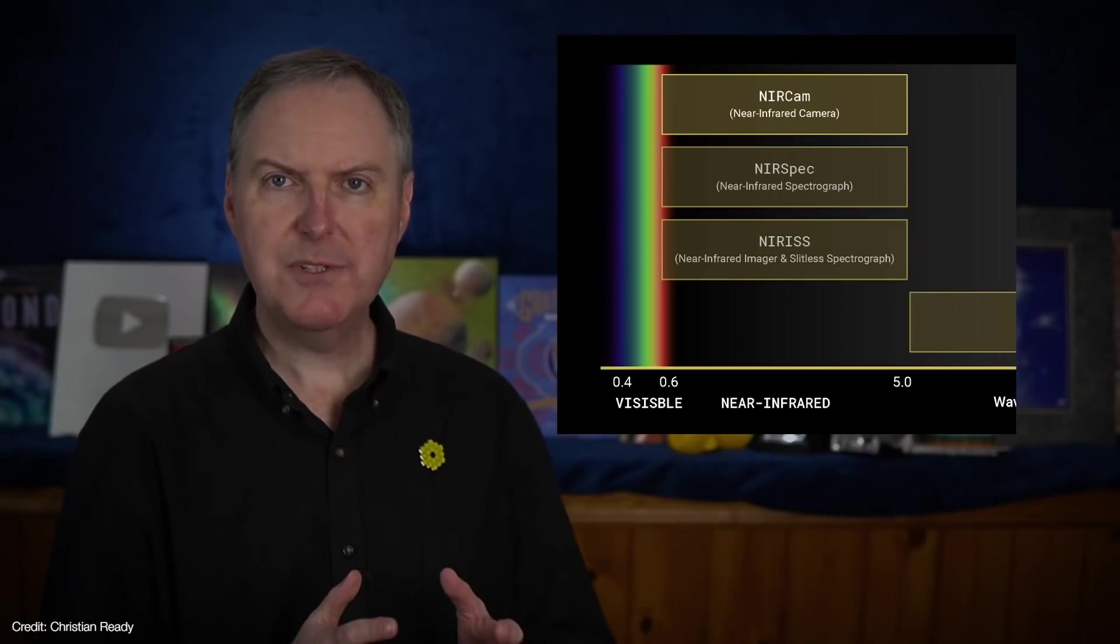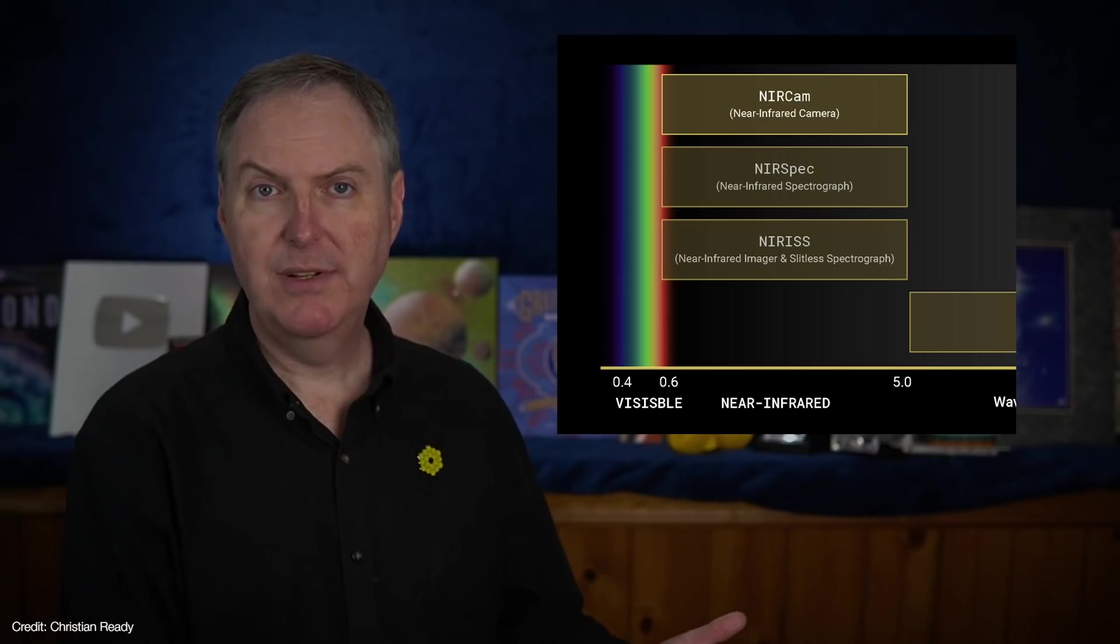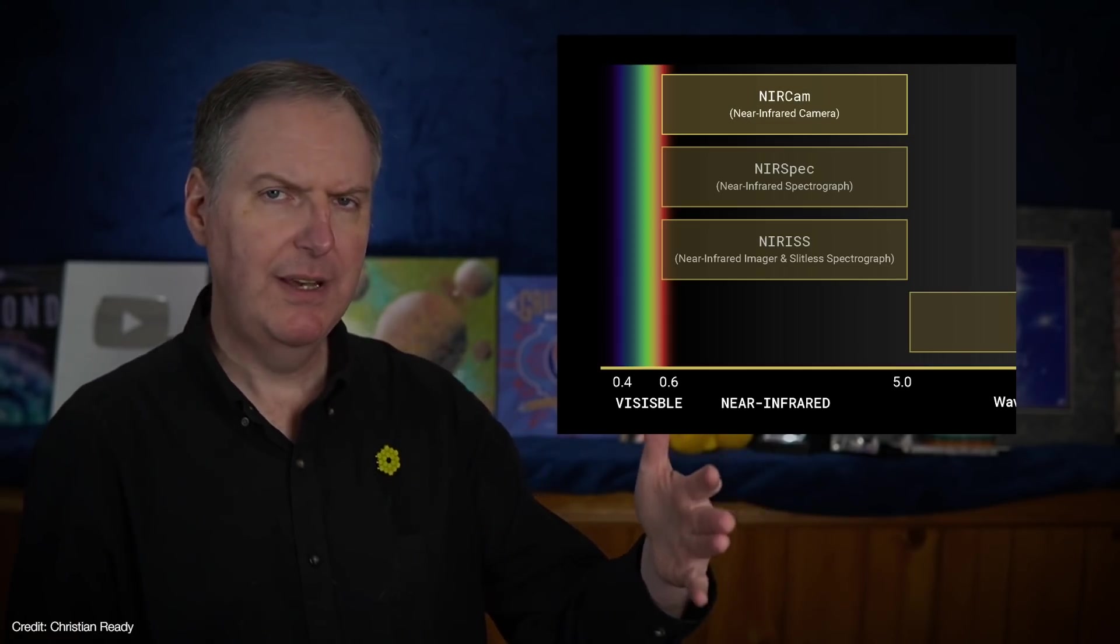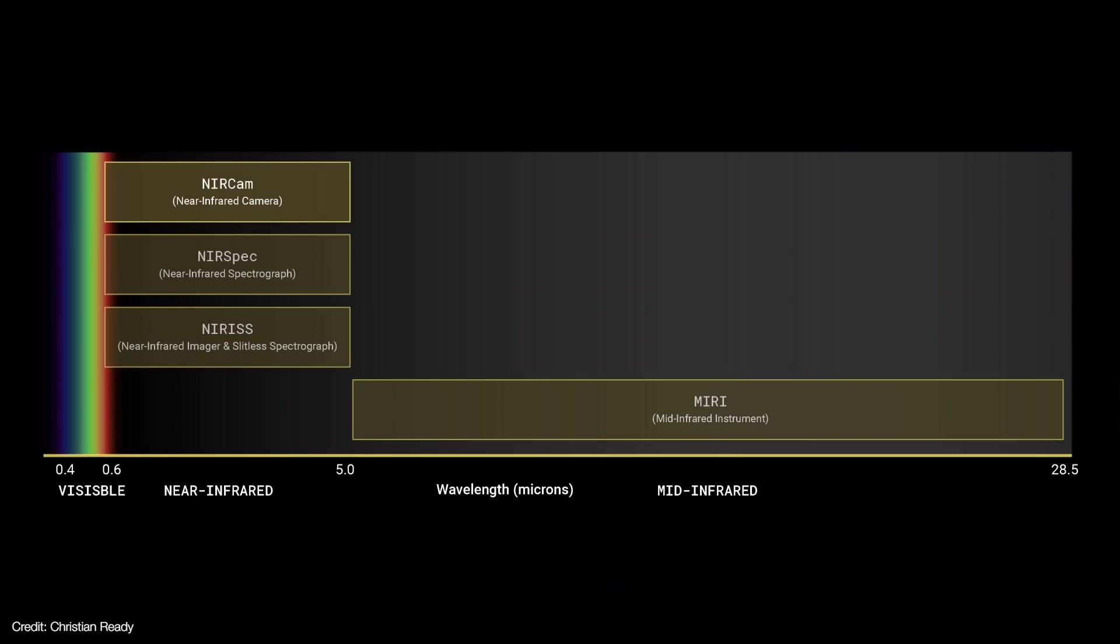NIRCam, NIRSpec, and NIRISS are all near-infrared instruments. So they're sensitive from around 0.6 to about 5 microns. But the mid-infrared instrument, or MIRI, picks up where the others leave off and continues all the way out to 28.5 microns.